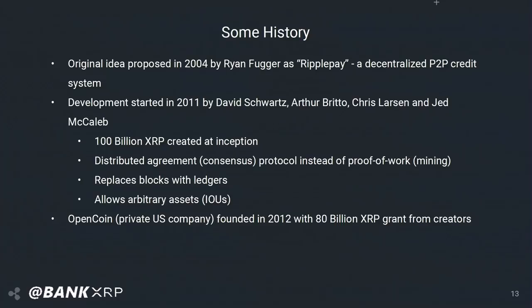Once XRP Ledger was created, they also created 100 billion XRP. That 100 billion XRP was gifted by the creators to a private U.S. company named OpenCoin, and OpenCoin is what became Ripple.